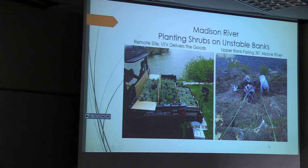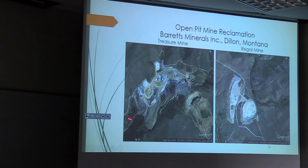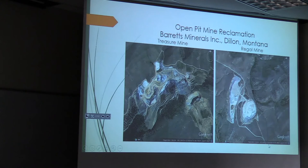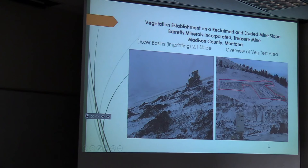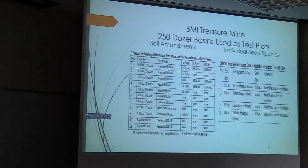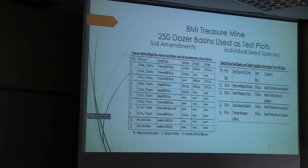Mine reclamation: about 1,000 acres of disturbance. These slopes we've been working on for 20 years getting them revegetated. The Regal Mine has about 200 acres of disturbance in the pit. These are final reclaimed slopes with temporary seed mixes and cover crops used on the topsoil piles, since those piles will be used within two or three years. We installed 200 dozer basins on a deeply eroded mine slope that was not successfully revegetating — this is an example of some of our soil amendment treatments. We tested native seeds and some introduced species across a large number of test plots. The results are proprietary and belong to Barrett's Minerals.